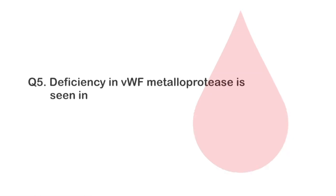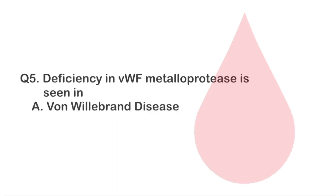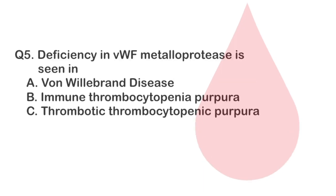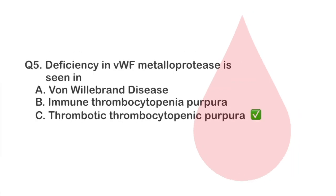Question 5. Deficiency in von Willebrand factor metalloprotease is seen in option A, Von Willebrand disease. Option B, Immune thrombocytopenic purpura. Option C, Thrombotic thrombocytopenic purpura. The correct answer is thrombotic thrombocytopenic purpura.